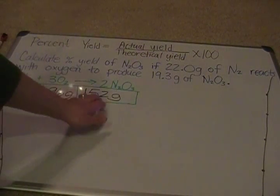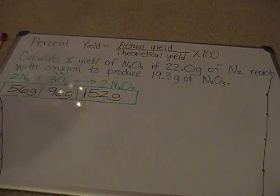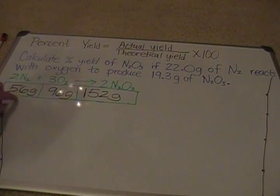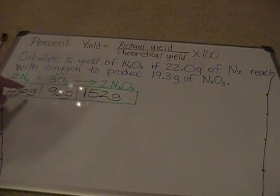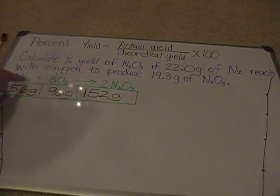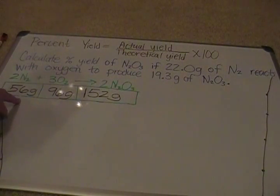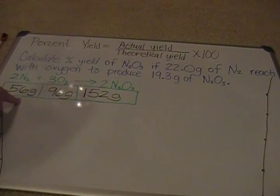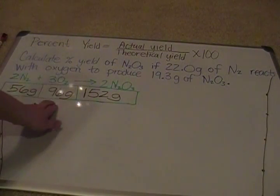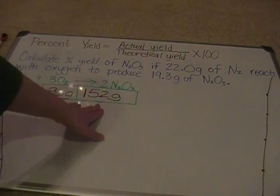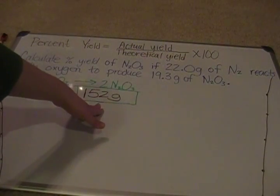I've filled in our chart with our masses. These are rounded to whole numbers. I got the mass of nitrogen from the periodic table, which was 14, multiplied by 2 to get N2, giving 28, then multiplied by 2 moles to get 56 grams — that's the molar mass of N2 times 2 moles. The chart also shows values for 3 moles of oxygen gas and 2 moles of N2O3.